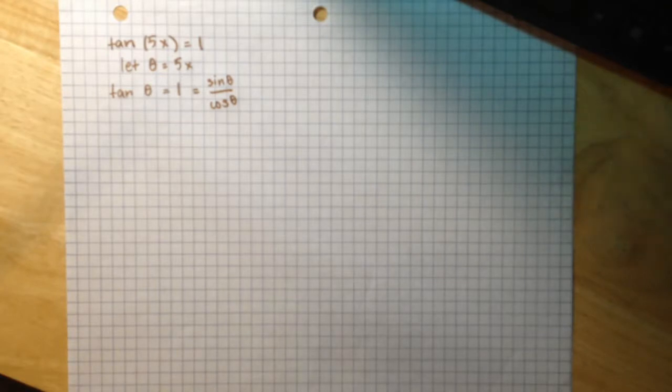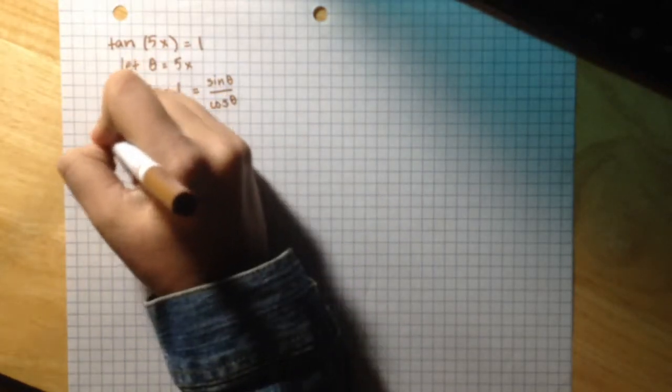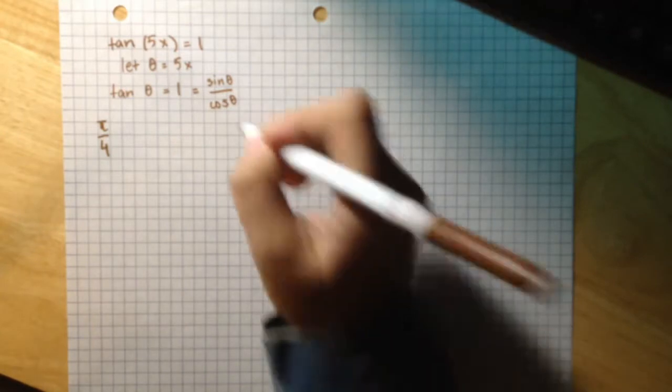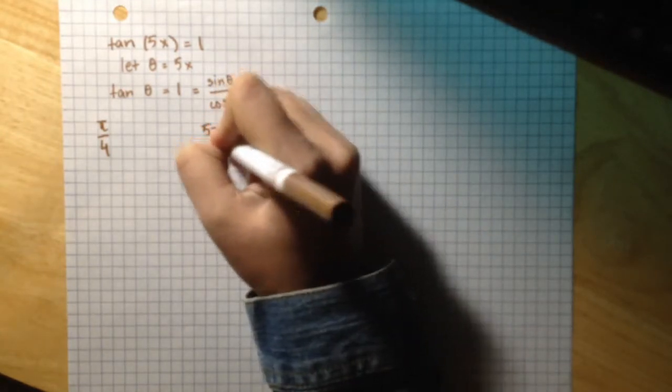When we're looking for two angles, the sine of the angle will have to be the same as the cosine of the angle because their ratio will be 1 over 1. So those two angles on the unit circle are pi over 4 and 5pi over 4.